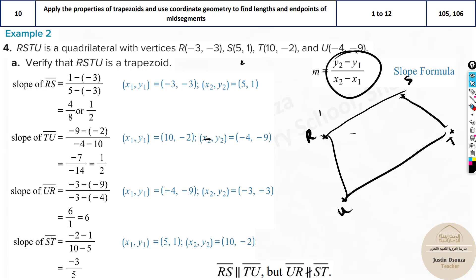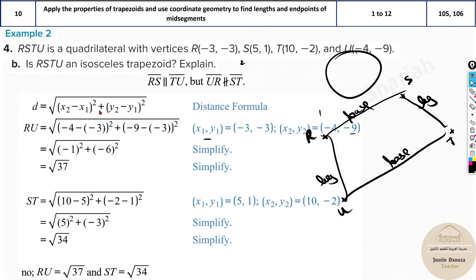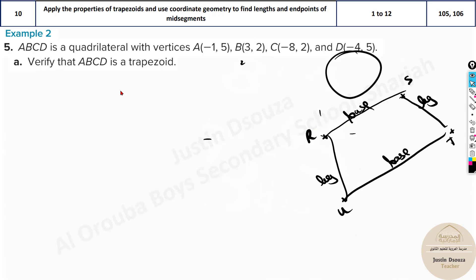The bases are parallel, and those are called the bases. The legs must not be parallel — and we found the legs are not parallel. So this is a trapezoid. The next question is whether it is an isosceles trapezoid. Find the length of both legs RU and ST using the distance formula: square root of (x2 minus x1) squared plus (y2 minus y1) squared. If lengths are equal, it's isosceles. Here, square root of 37 is about 6.1 whereas square root of 34 is about 5.9, so they're not equal — this is not an isosceles trapezoid.